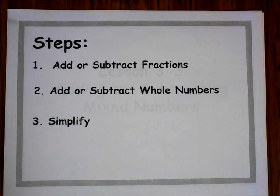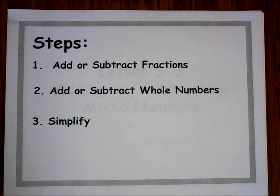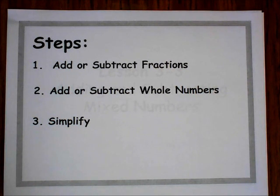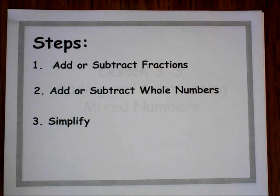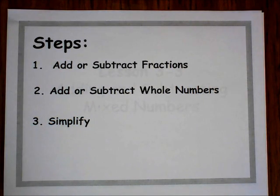Step 1, we're going to add or subtract the fractions, and remember if we don't have a common denominator, we have to find a common denominator first and write our equivalent fractions before we can complete Step 1. Step 2, we're going to add or subtract the whole numbers, and our last step in every fraction problem is always to simplify.